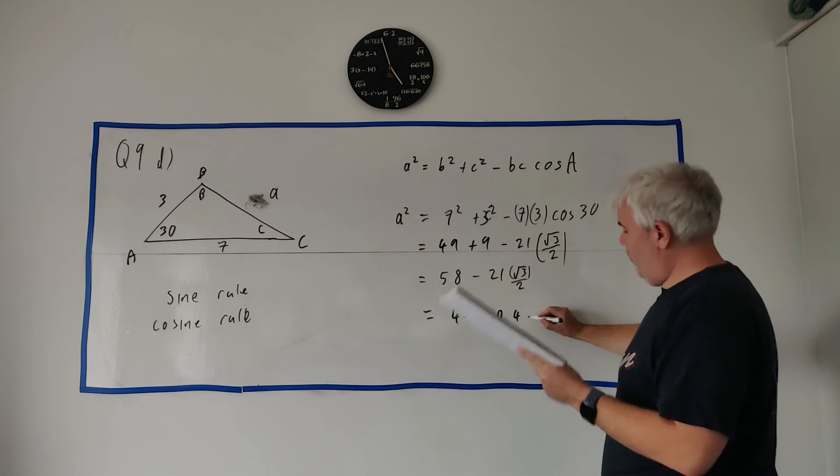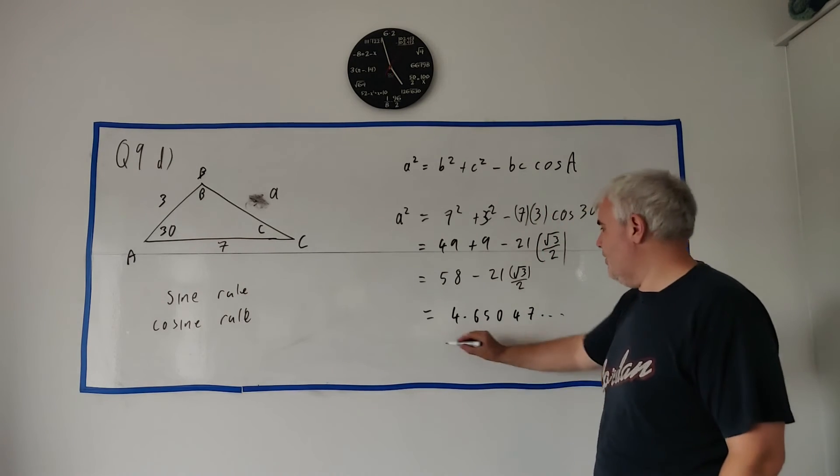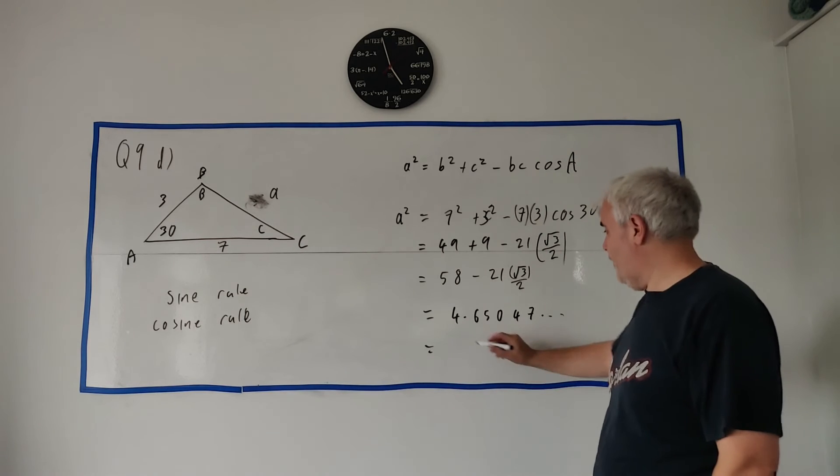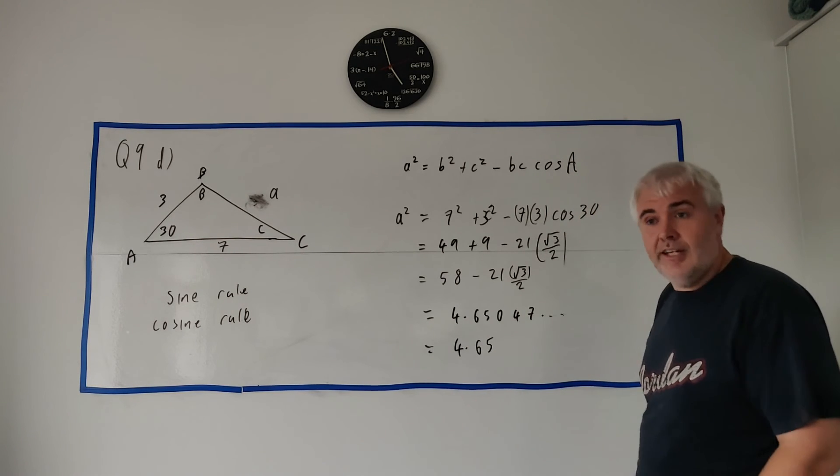This would become 58 minus 21 times square root of 3 over 2. At this point, I would use a calculator. Put it in and you will get 4.65 something. 0, 4, 7. Something like that. And they ask you to get it to the nearest two decimal places. Oh, they already gave us the answer. I forgot that. Yeah, 4.65. And that's correct.